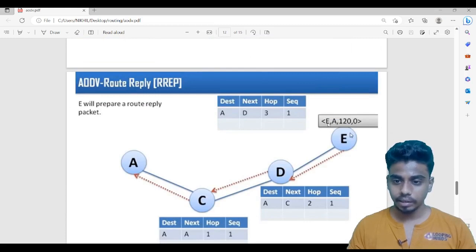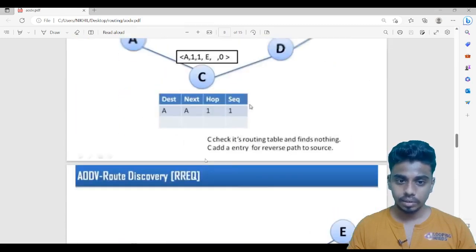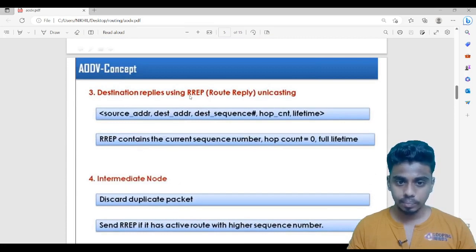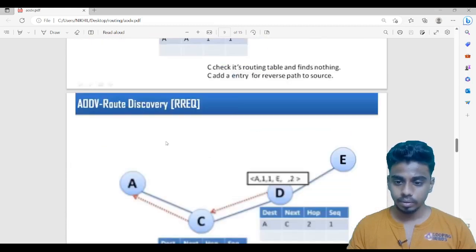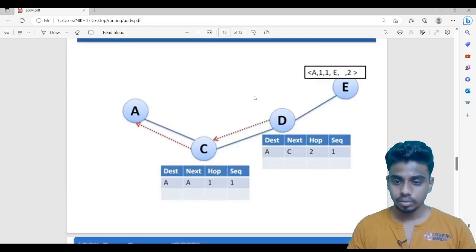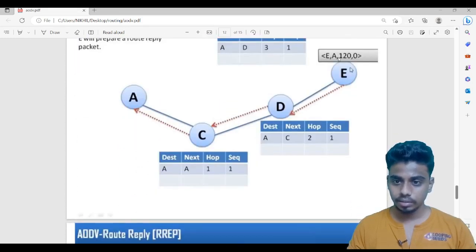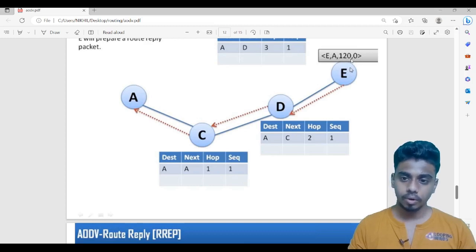E will create a packet. The syntax of reply packet will be different from that of the request packet. If you can see this destination reply using R reply, source address, destination address, destination sequence number, hop count. Source address, this is the source address, destination address, sequence number. This is the sequence number of E, then hop count. Now this will be passed to D.